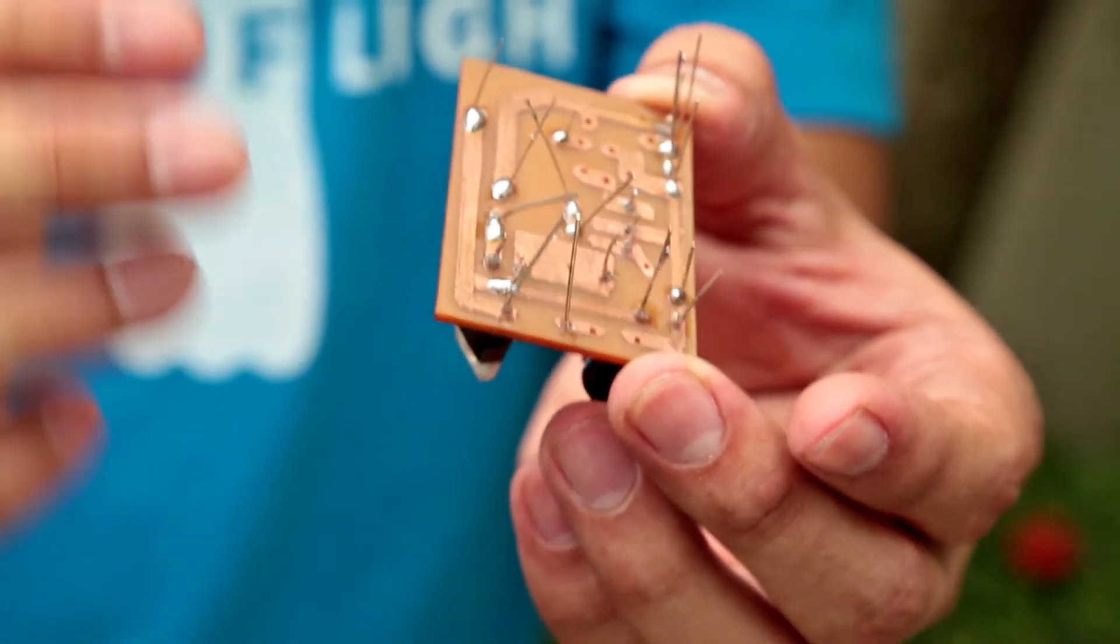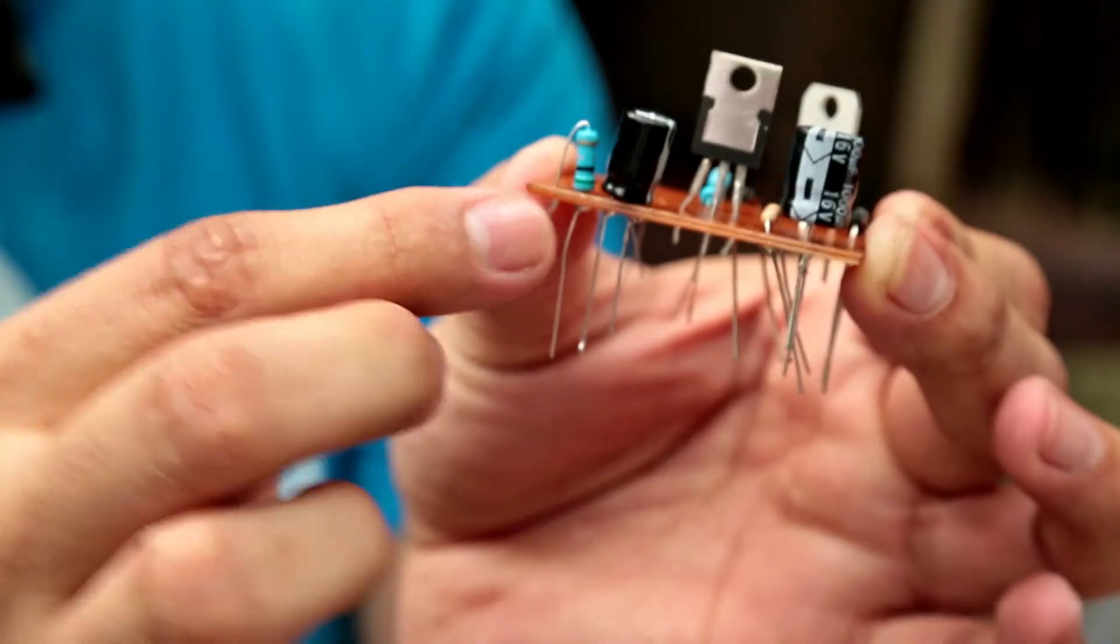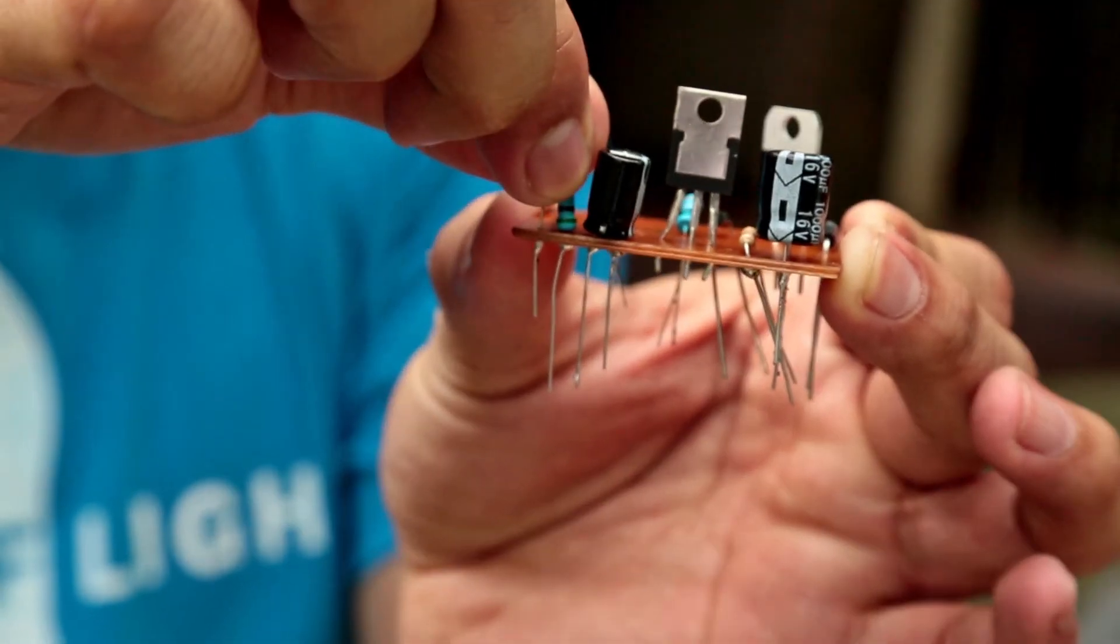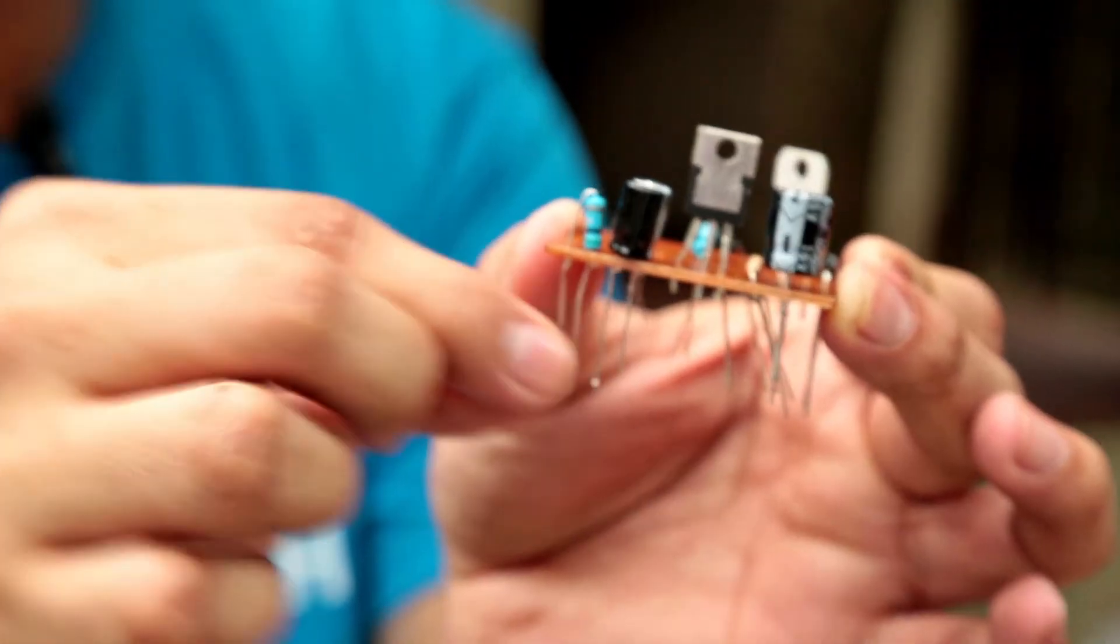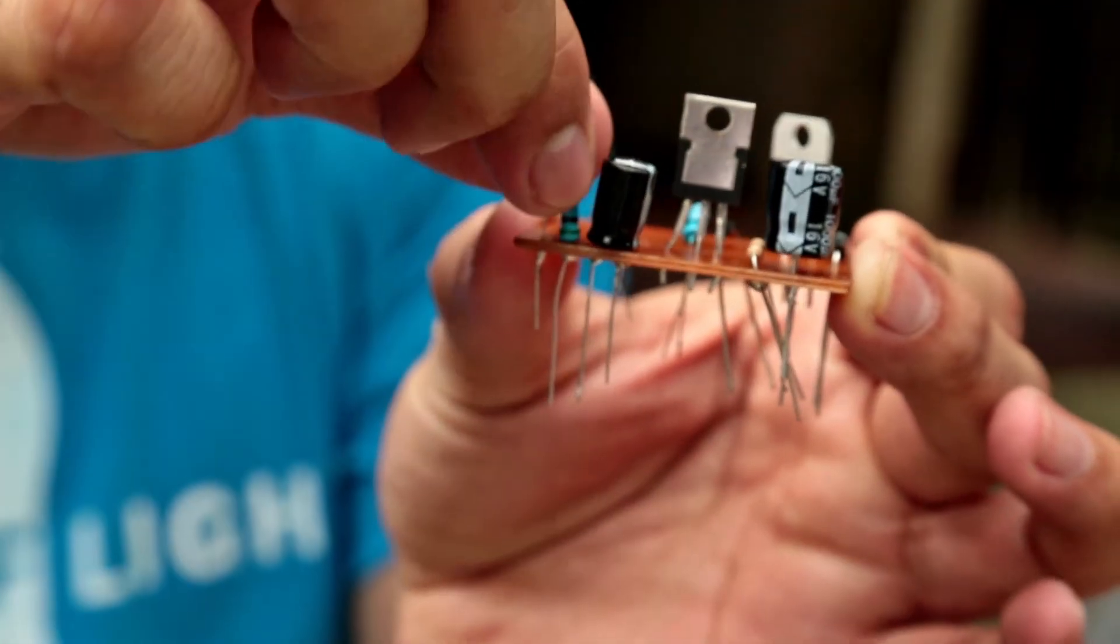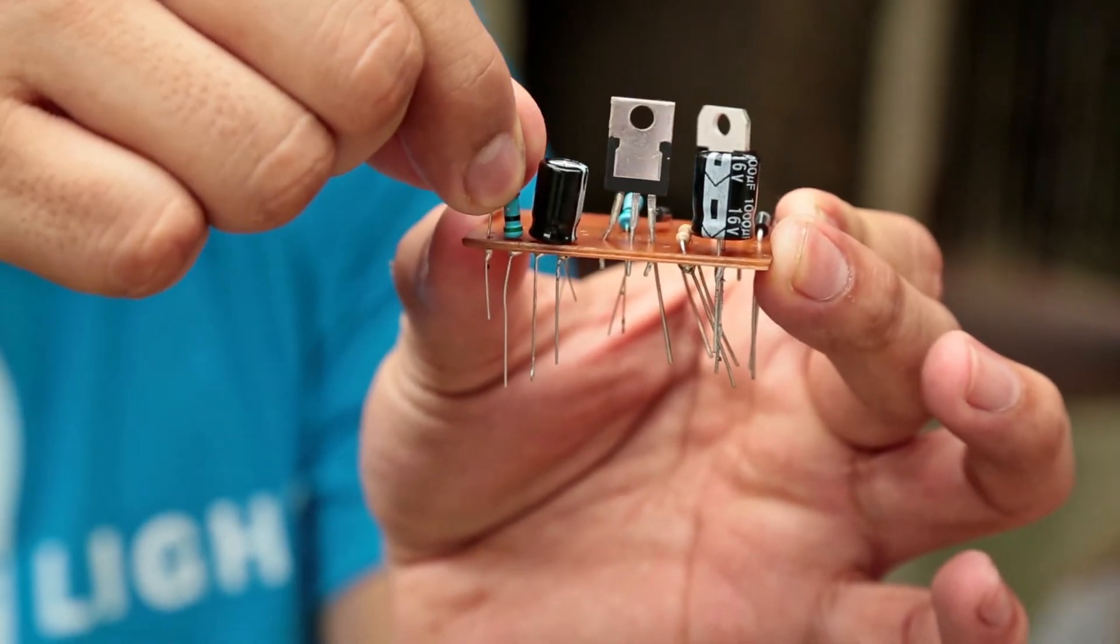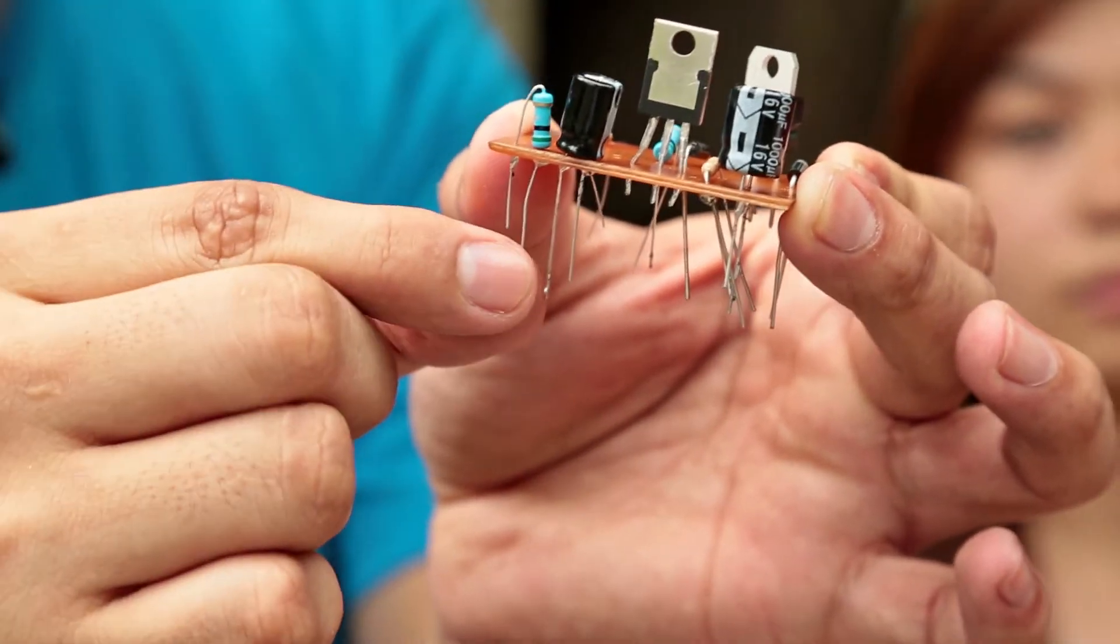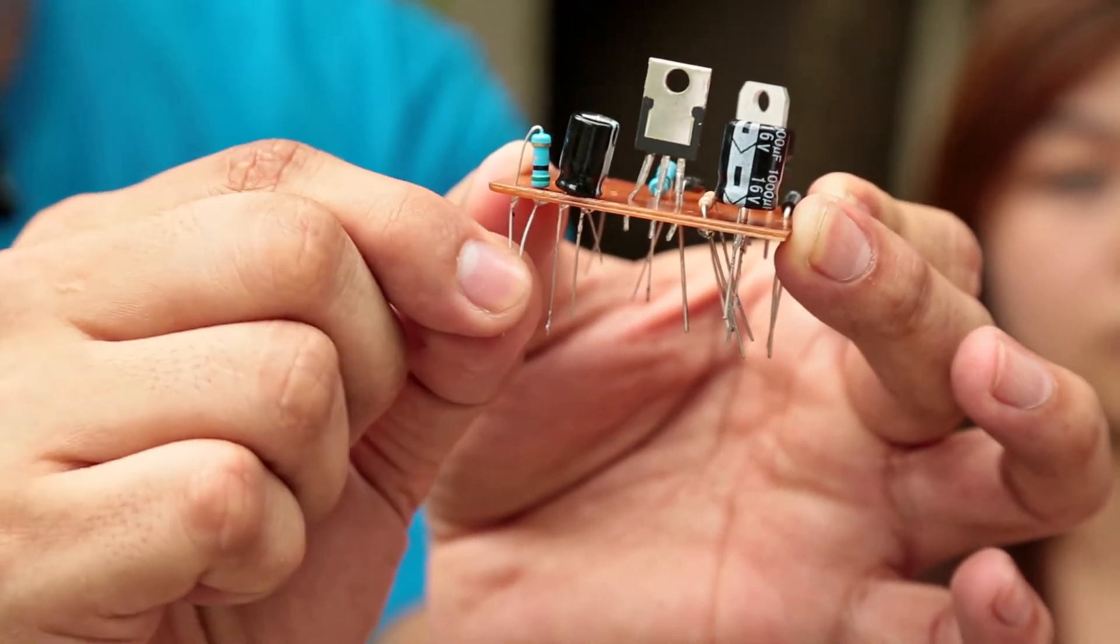To ensure parts are properly soldered, the components must be in a Hershey's Kiss or mountain shape formation and should have luster. If it doesn't, it might be a cold solder. With a cold solder, when you try to move the component, it will move under the board too. But this is a good solder—if we're moving the legs at the base, they remain static and don't move.